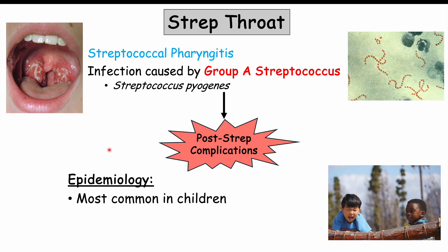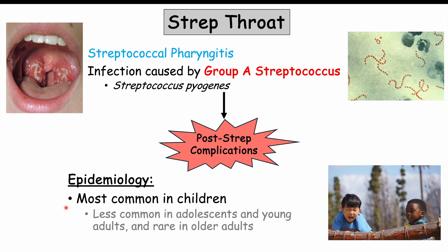Strep throat is most common in children, more specifically school-aged children. Under three years of age, strep throat is unlikely, and complications are less likely as well. Children within the school-age years are more likely to have the condition and its complications. As patients get older, it becomes less and less likely, and it's quite rare in adults over the age of 44. We'll discuss this in more detail later in the lesson.